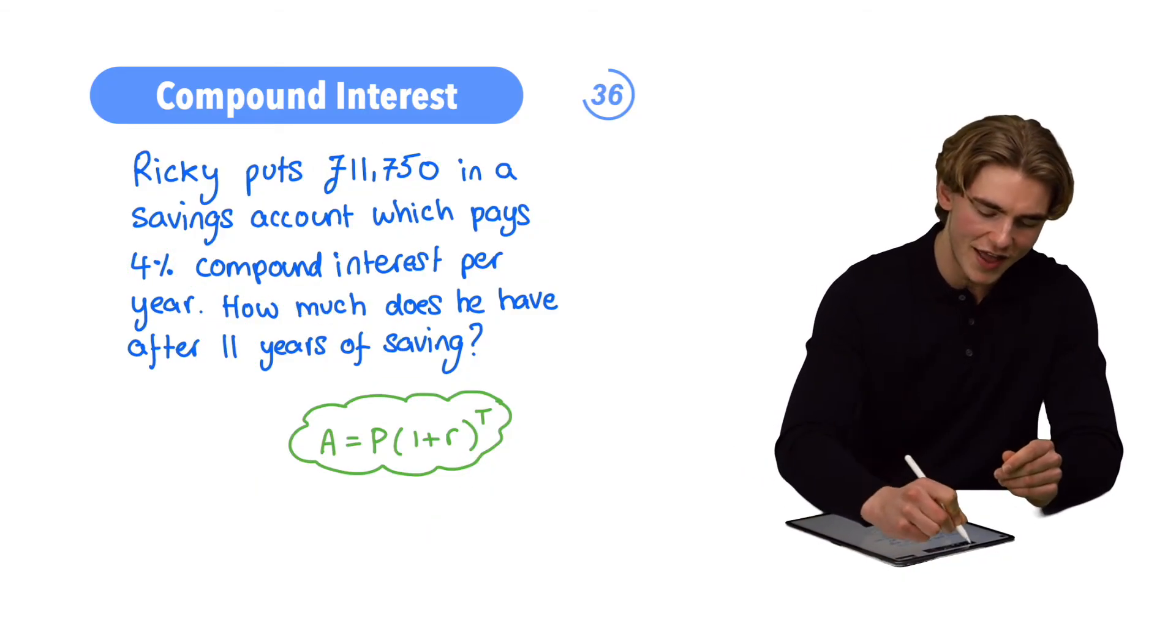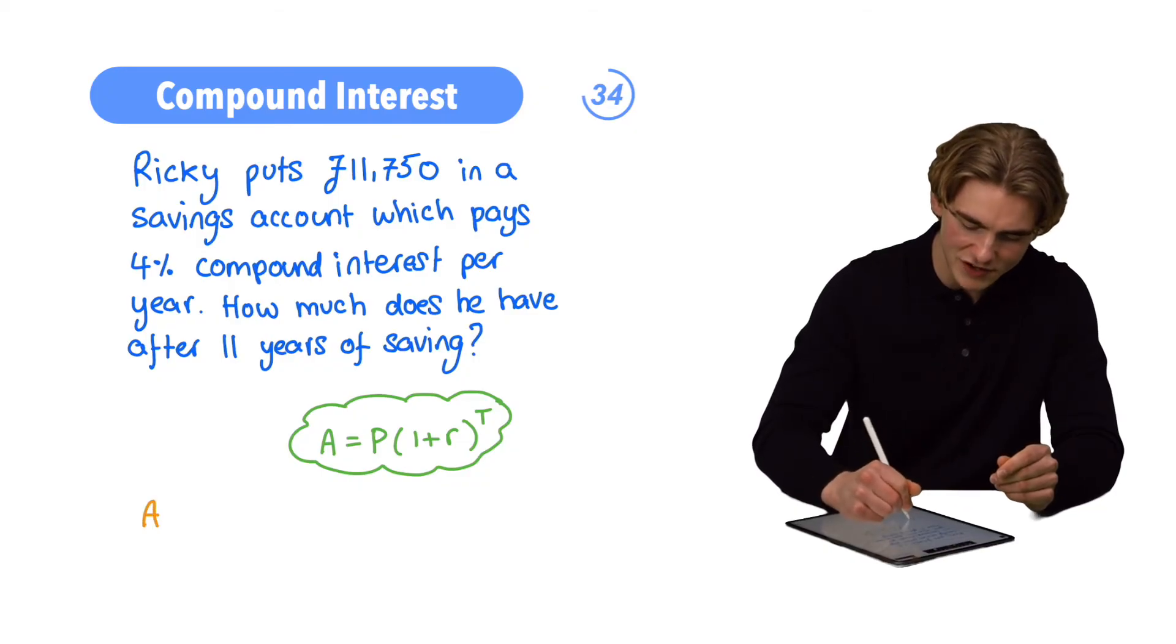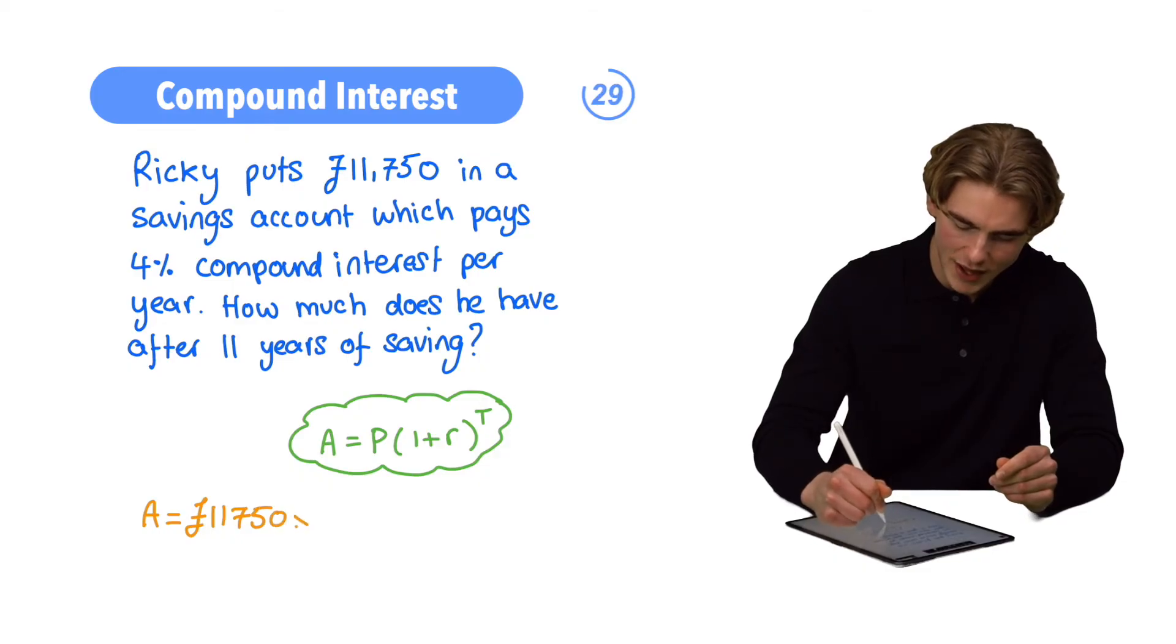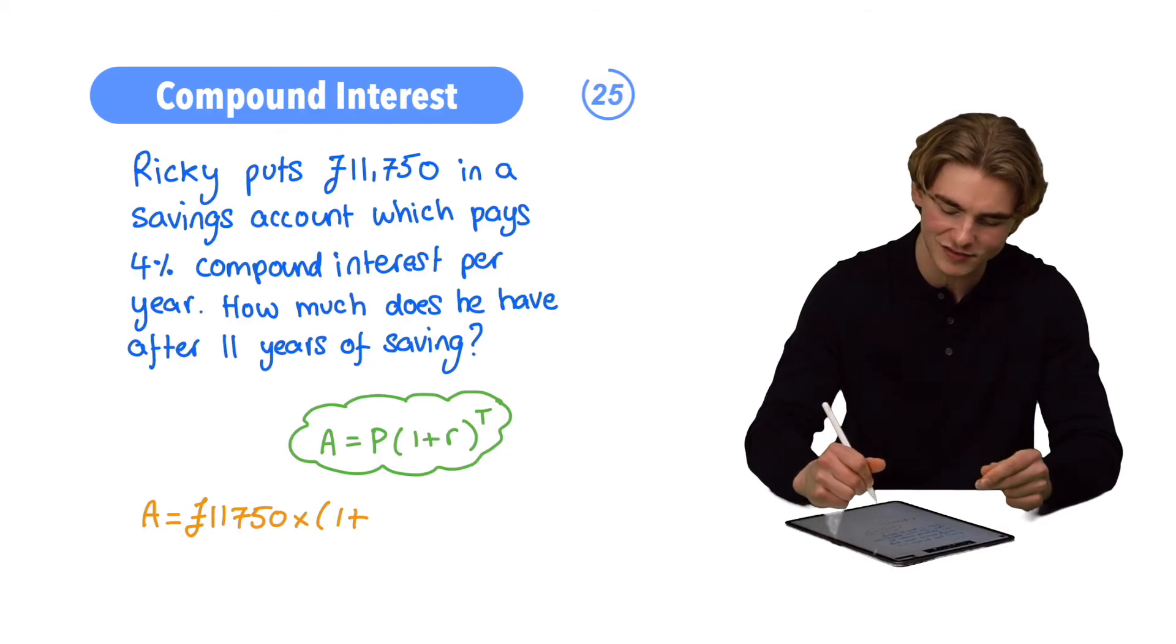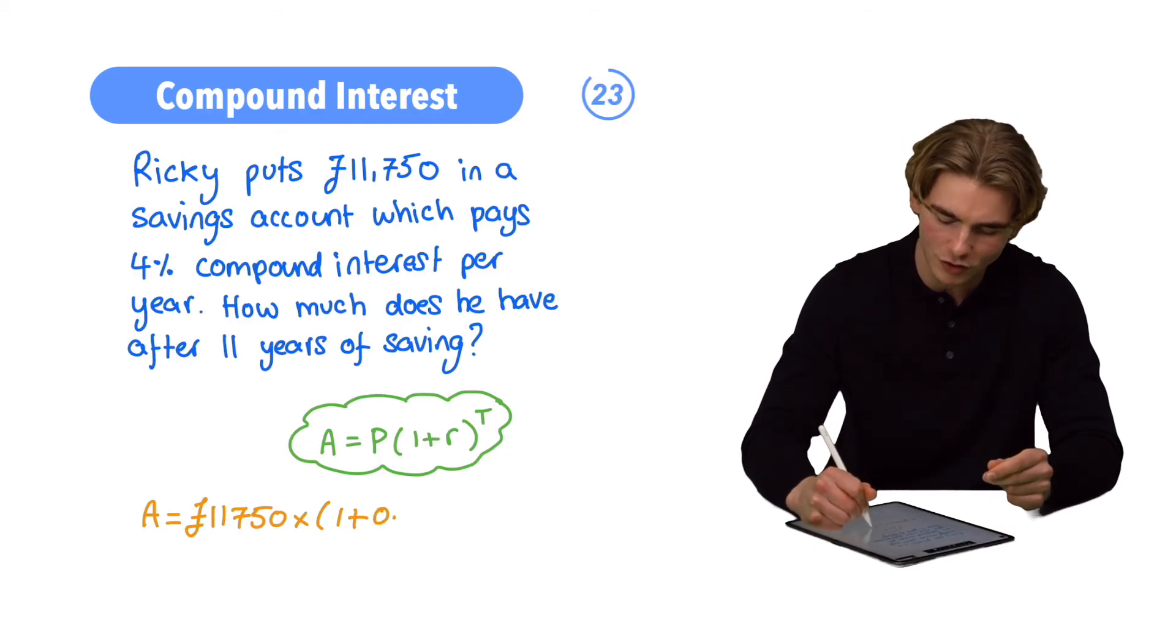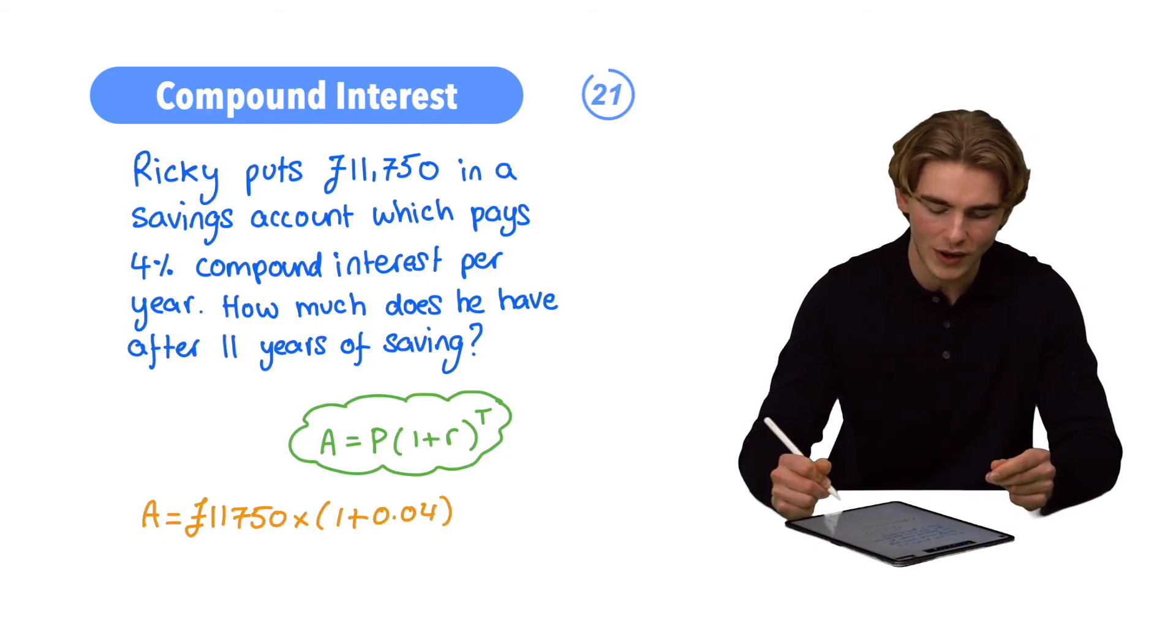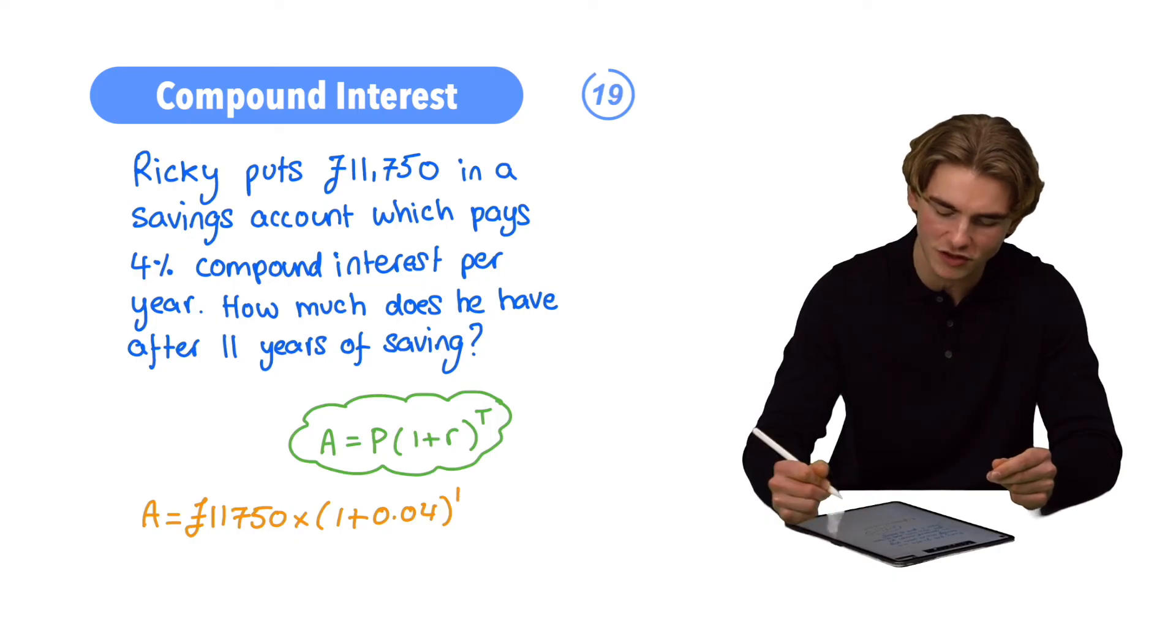Let's get it done. So we're going to have that A, our end amount, is equal to £11,750 times by 1 plus our interest rate as a decimal. 4% as a decimal, dividing it by 100, is 0.04. Then we're going to raise this to our number of time periods, which is 11.